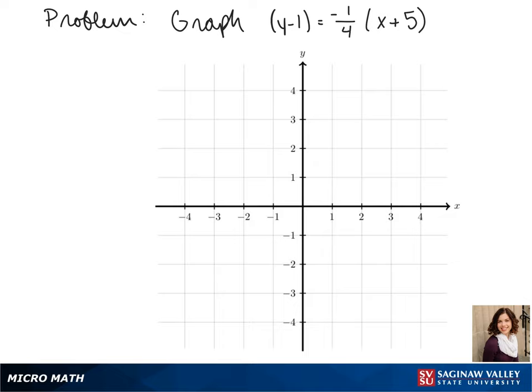Welcome to another day of algebra. Today we'll be graphing y minus 1 equals negative 1 fourth times x plus 5. Our line is in point slope form.